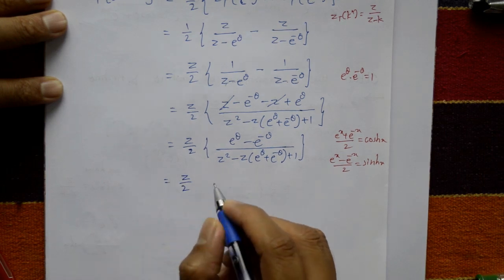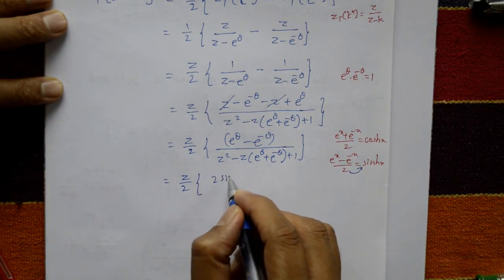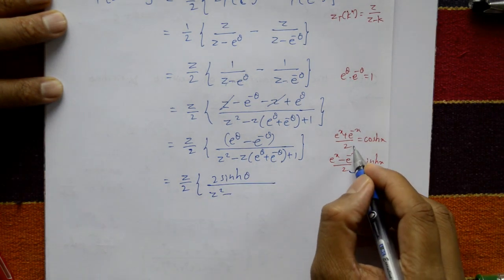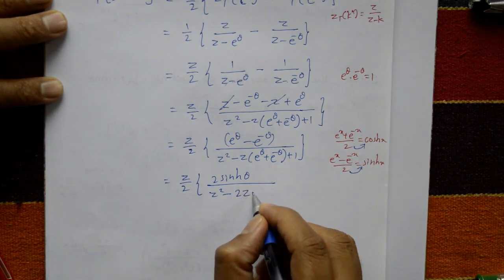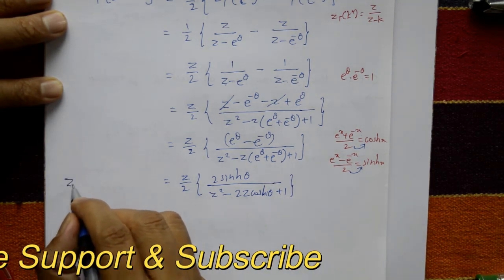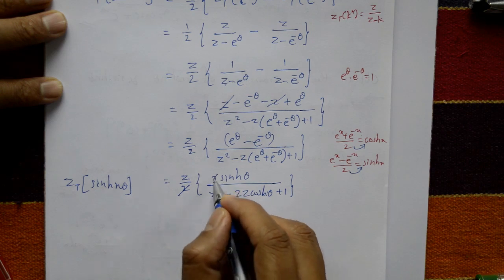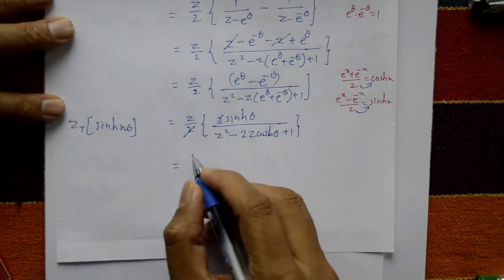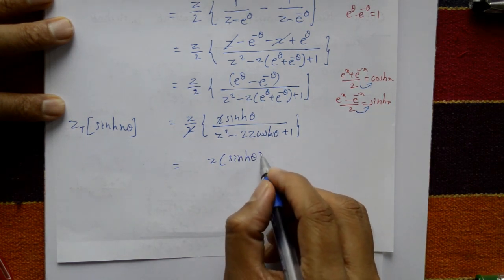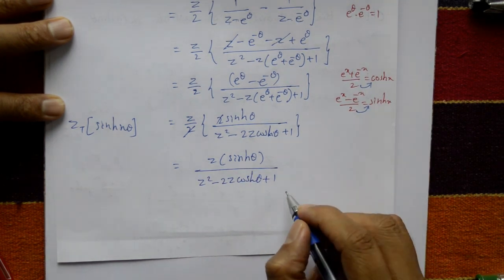This gives Z/2 times 2·sinh(θ) / (Z² - 2Z·cosh(θ) + 1). The 2's cancel, so the Z-transform of sinh(nθ) equals Z·sinh(θ) / (Z² - 2Z·cosh(θ) + 1). This is the required solution.